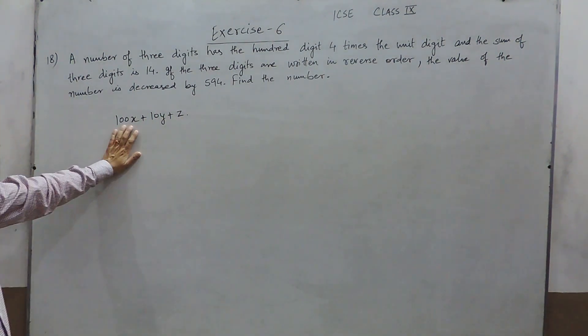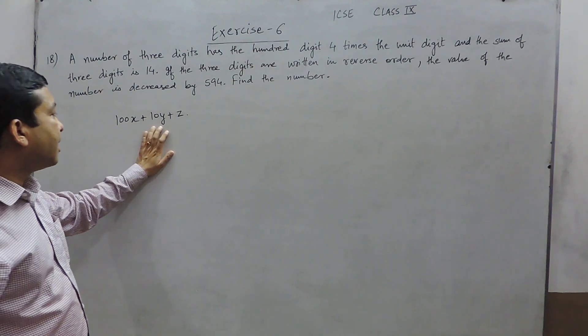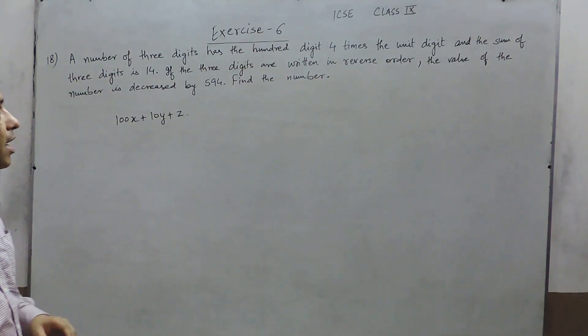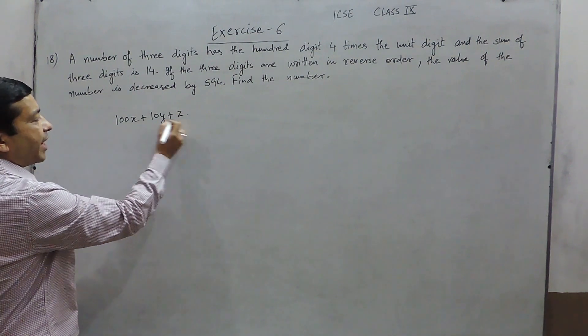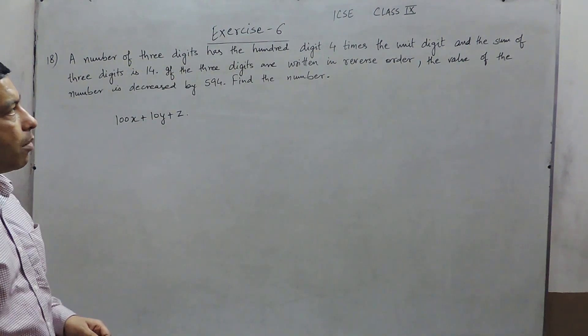Because x is at the 100th place, y is on the 10th place and z is at the unit's place. So this is the way in which we can write a 3 digit number.